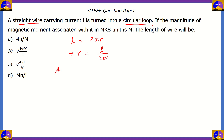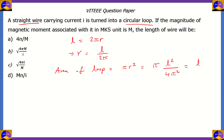Now, how do we find the area of the circular loop? The area of a circle is π times the square of its radius. In this case, that will be π times L squared divided by 4π squared. The 1π gets cancelled from the numerator and the denominator. So what we get is L squared divided by 4π as the area of the circular loop.